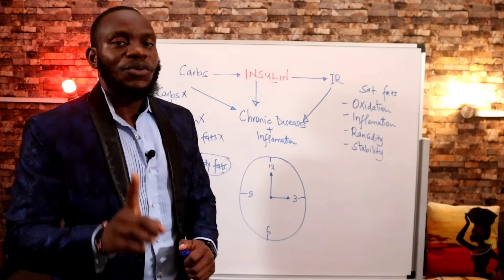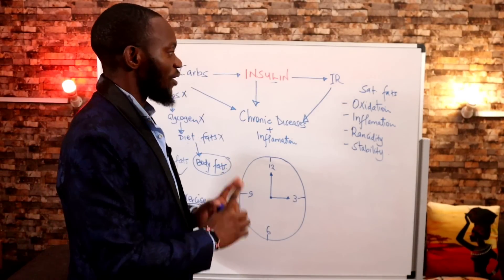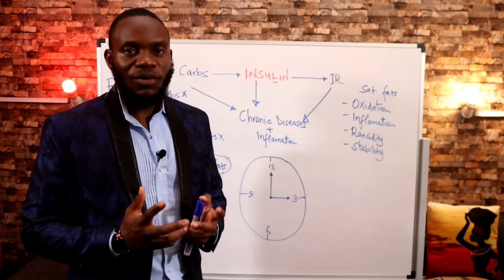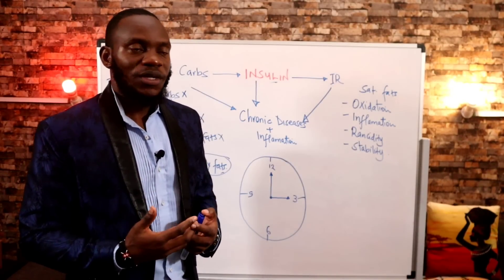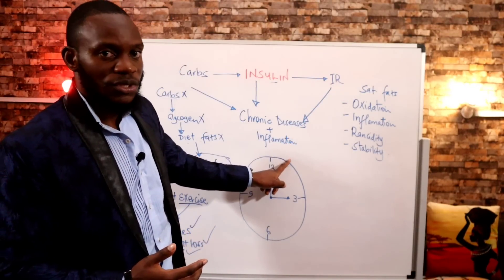Animal fat will never get you fat. Animal protein will never get you fat. What gets you fat is carbohydrates, especially refined carbohydrates which are absorbed quicker. They cause you a spike in insulin, they cause insulin resistance, and then you get into chronic conditions and inflammation.